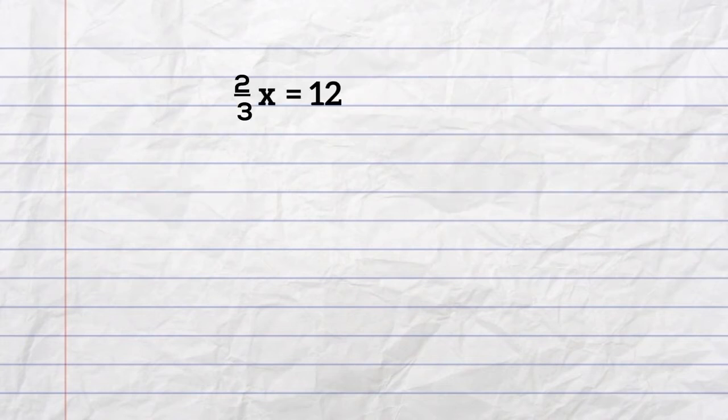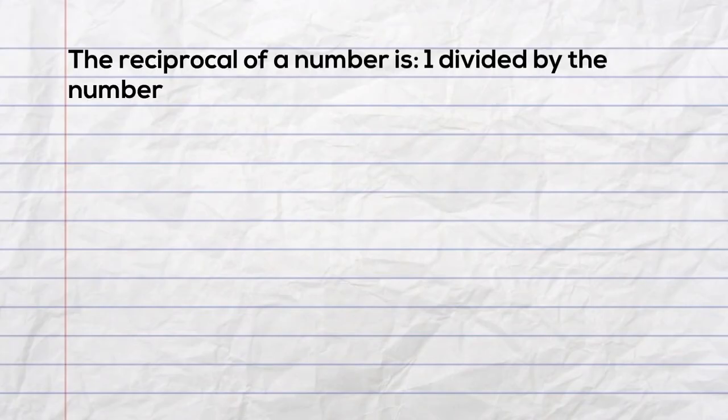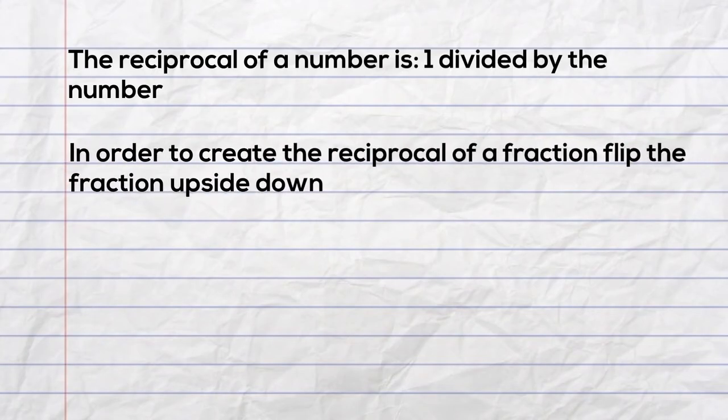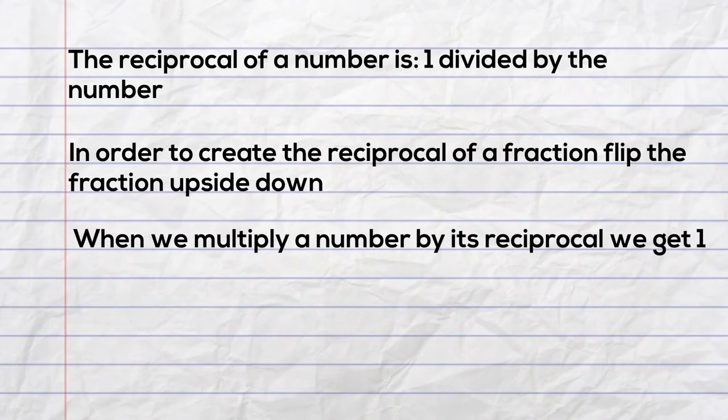Problem number 1, you have a fraction times a variable, and it is a multiplication problem. 2/3 x is equal to 12. In order to complete an opposite operation, you can multiply the fraction by its reciprocal. The reciprocal is 1 over any number. In a fraction, you just flip the fraction upside down, and any number times its reciprocal is 1.